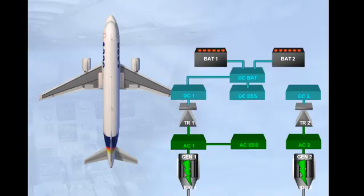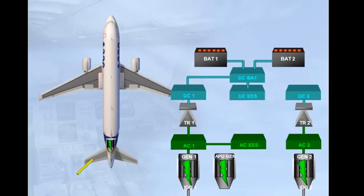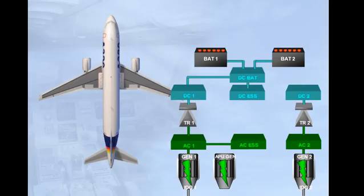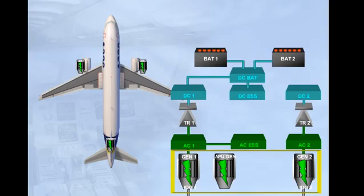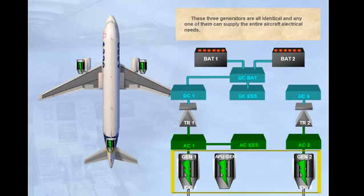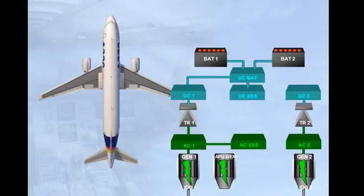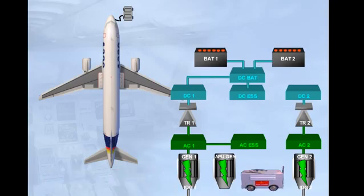The electrical network can also be supplied by the APU generator. These three generators are all identical, and any one of them can supply the entire aircraft's electrical needs. On the ground, the aircraft can also be supplied by an external power source.